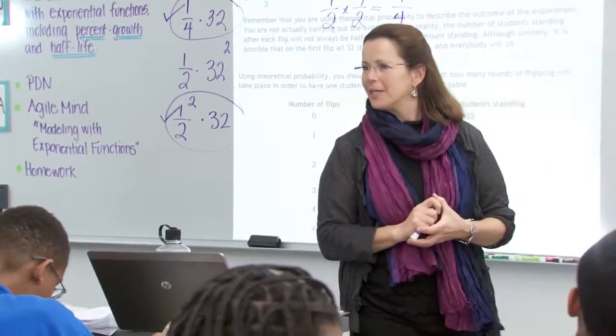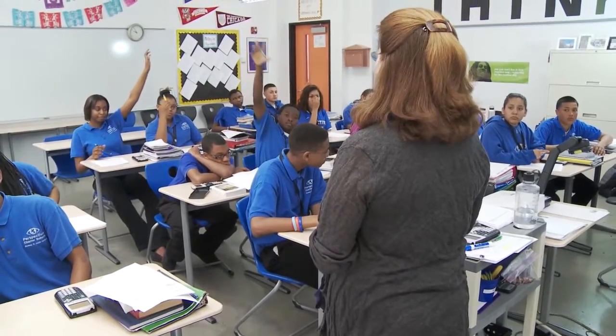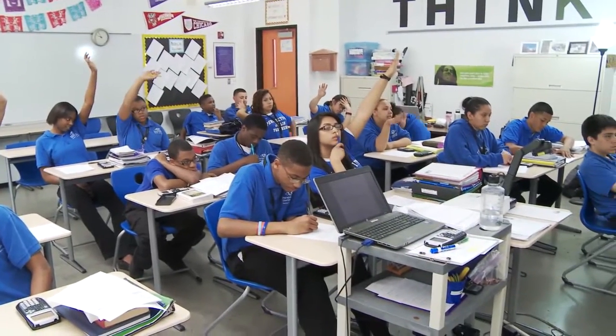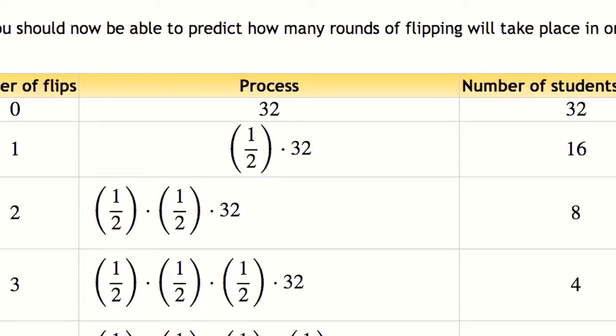Looking for a volunteer. We went from experimental data to theoretical data. We looked at both table representations and graphical representations of data, and then we tied all of that together using a mathematical framework. Dakira, go. One half cubed times 32. One half to the third power times 32. How many of you wrote one half raised to the power of 3 times 32, our starting value? How many wrote it the long way — one half times one half times one half times 32? Are they equivalent? Yes. Absolutely.